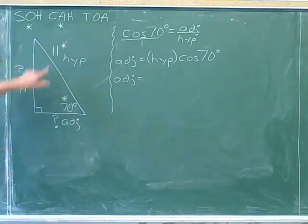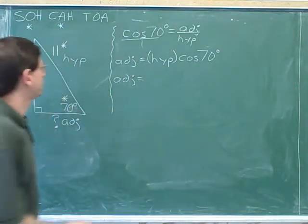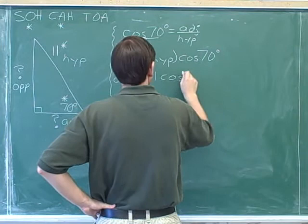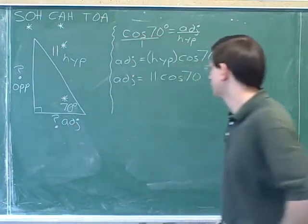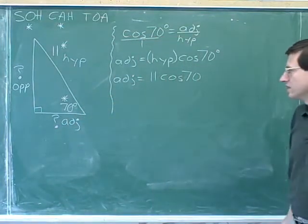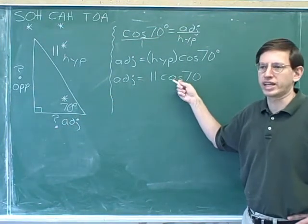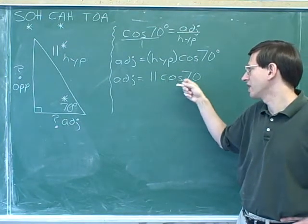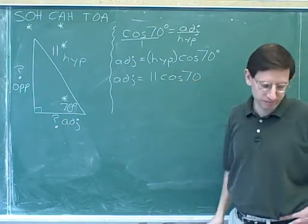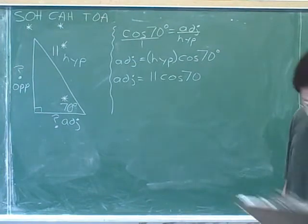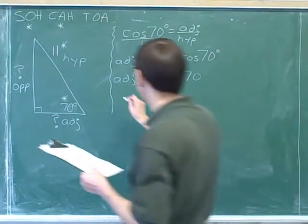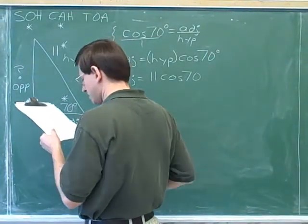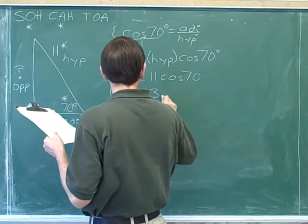We know how long the hypotenuse is: 11. So we have 11 times the cosine of 70. We can do this in one step on our calculator — just type in 11 times cosine 70. And we get that the adjacent side is approximately 3.8.